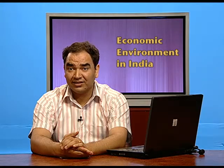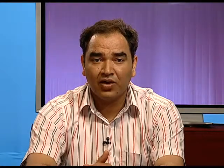Because of that, by the year 1991 the government was almost on the threshold of becoming insolvent. And in 1991, there were so many forces compelling the country to introduce a new industrial policy, so as to remove all the negativity in the Indian economy. The very first thing which forced the government was negative agricultural growth.